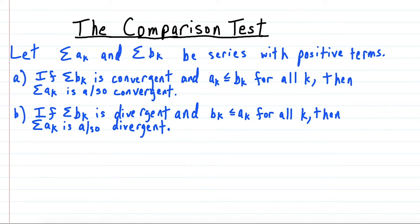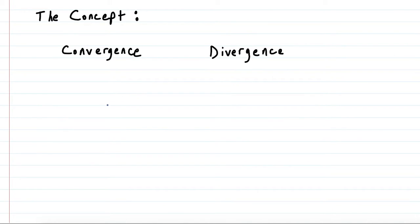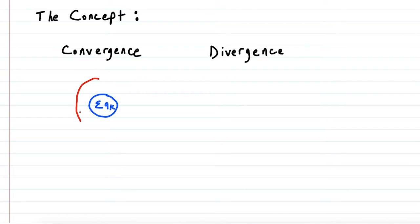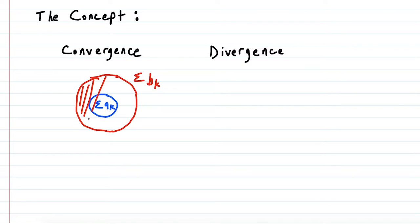Here is the comparison test, just in case you don't have it in your notes — pause the video if you need to copy this. The comparison test can be a little tricky to understand. To help remember it: if I'm trying to show that some series a_k converges, the strategy is to compare it to something bigger that's known to converge. If I know that some series b_k converges, then everything smaller than it is also going to converge as well.